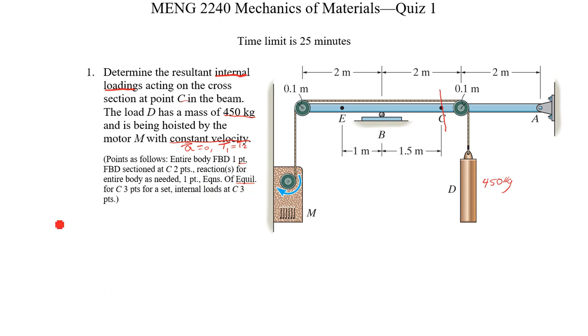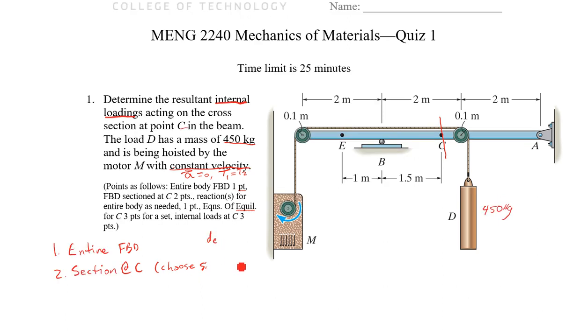So our general approach here. Step one, we're going to do an entire free body diagram. Step two, section at C. We'll choose a side. Step three, find reactions. Step four, we'll calculate internal loads with equations of equilibrium.